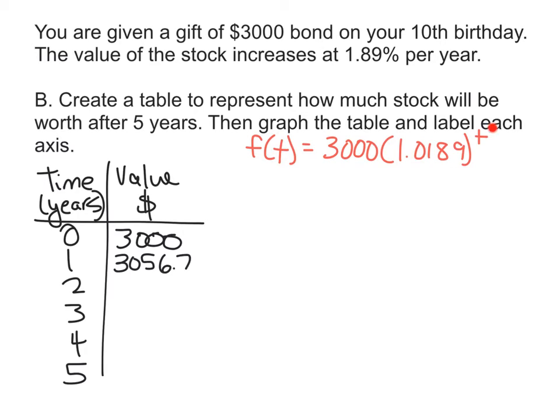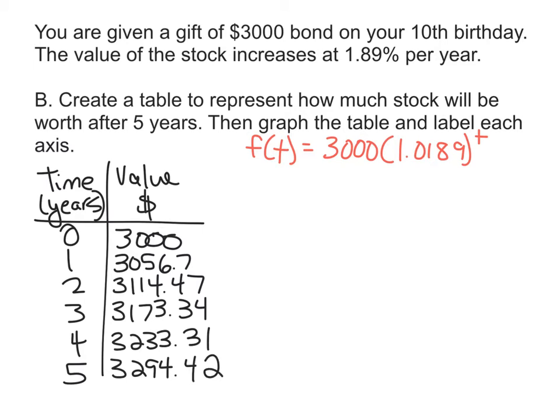So, when I plug in a 2, again, I'm just plugging in 2. So, that means I'm going to have to square this 1.0189 and then multiply it by 3,000. And I did this, honestly, guys, in my calculator. I just kept using the calculator. And then I get 3,114.47 cents. When I plug in a 3, I get 3,173.34 cents. When I plug in a 4, I get 3,233.31 cents. And when I plug in 5, I get 3,294.42 cents. So, again, we went to 5 because of this right here. It said worth after 5 years.